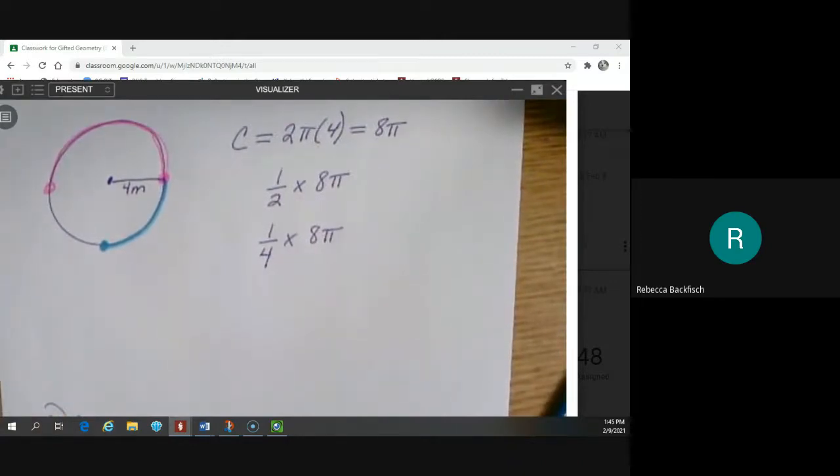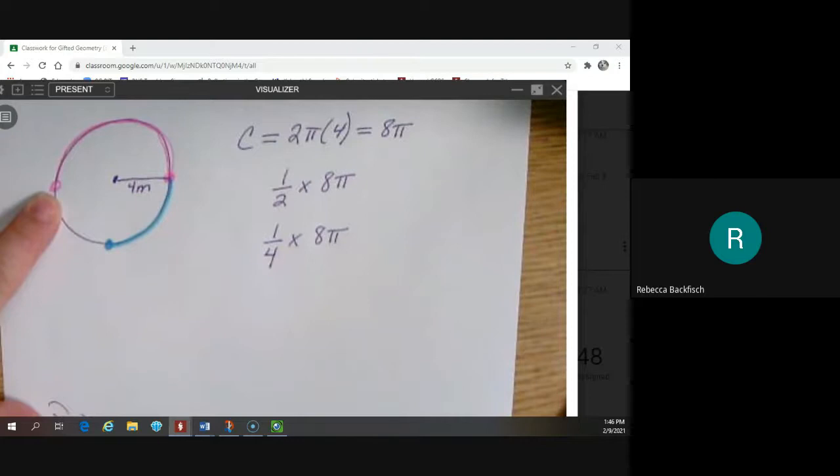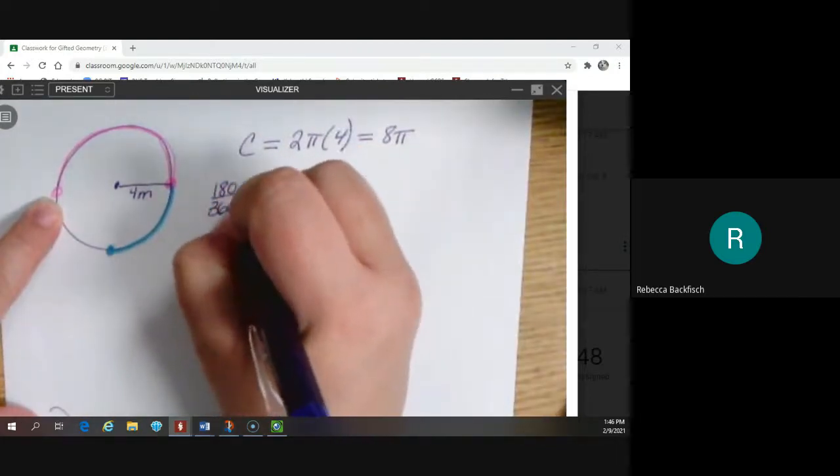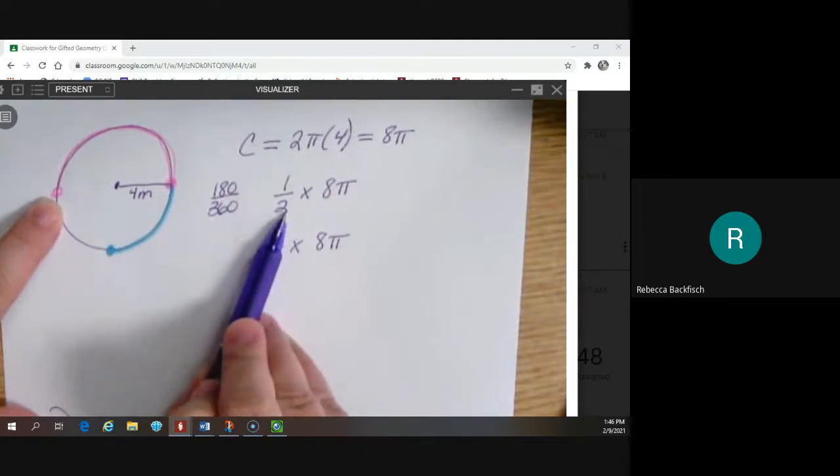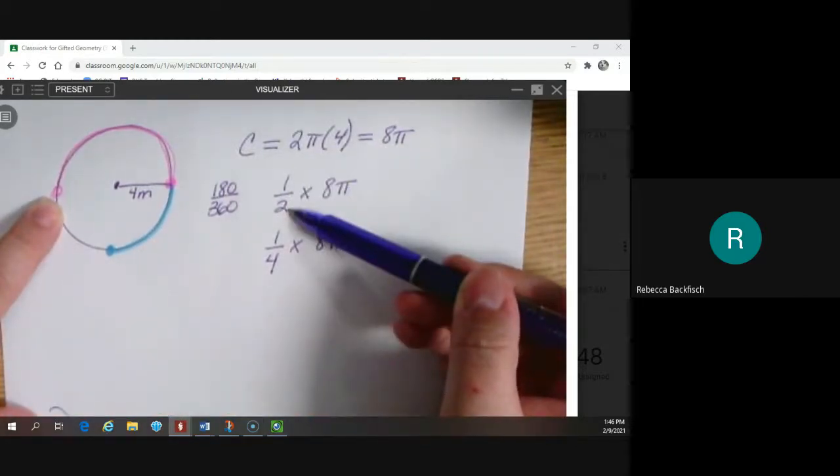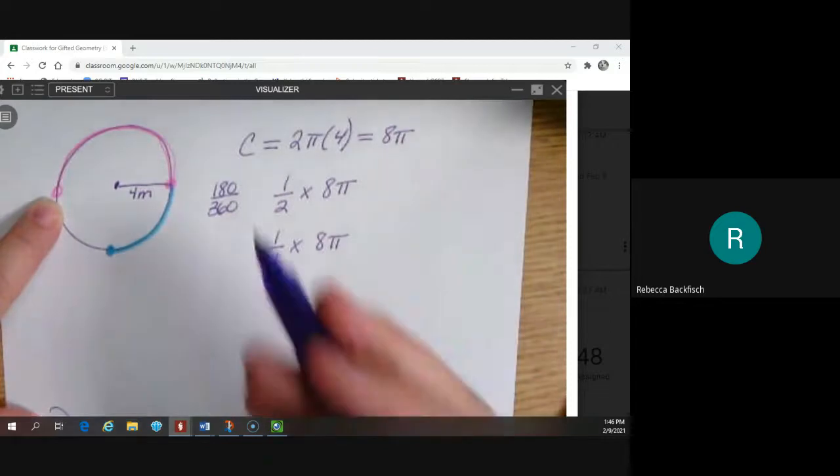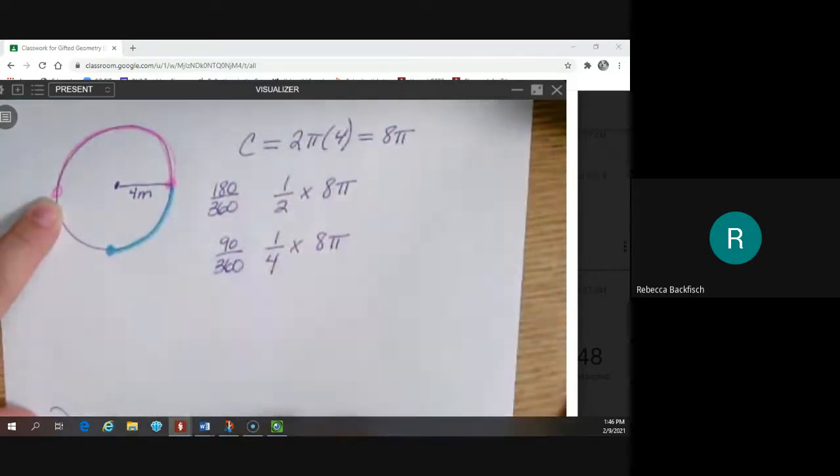This is all we're doing. We're taking a chunk of the circle circumference. We're saying, I want a fraction or a piece of the distance all the way around. And what we're using to tell us how big a piece to get is the degrees. So halfway around the circle, how many degrees would that be? 180. 180 over 360 is the same as one half. It's not always such a pretty fraction, but it is always the same idea.